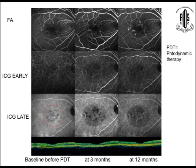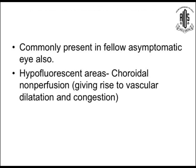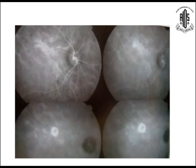For photodynamic therapy planning: this is the angiogram, early-phase ICG, and late-phase ICG, showing the area where PDT was performed. After 3 months the area is hypofluorescent, and after 12 months the area is slightly increasing. ICG changes are commonly seen in fellow asymptomatic eyes also. The hypofluorescence area shows choroidal non-perfusion, giving rise to vascular dilatation and congestion — that may be the underlying cause, seen in early and mid-phase ICG. This photo shows choroidal vessel dilatation and late-phase tissue staining with the ICG dye.